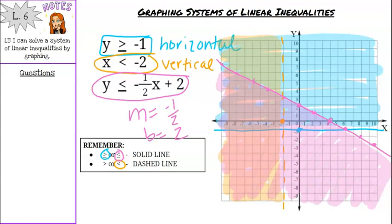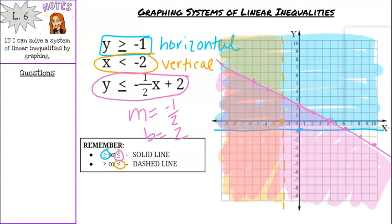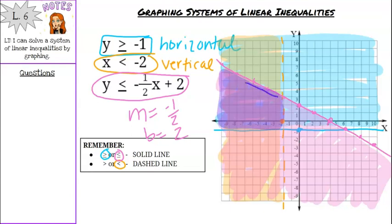Since we had three colors, we can only shade where all three colors overlap. Take your darker color and shade where all three overlap — it's just this small area right here. That boxed-in region is the solution set for this system of inequalities. That's all your notes for today. Go ahead and move into your iExcel practice. See you next time.